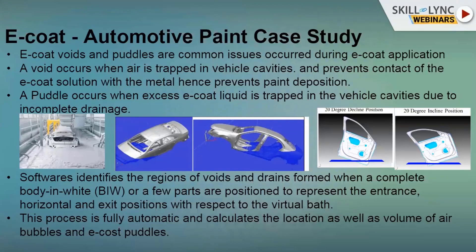The identification depends on experience - you analyze where exactly the issue will be in the panel. Different methods are applied industry-wise, as every industry has different BIW entry and exit angles for the tank. BMW and Ford have different standards accordingly. The software identifies regions of voids or air bubbles on the metal parts. For a complete BIW body, you cut the position to represent the entry, horizontal, and exit positions with respect to the virtual world - this process is done in the software.